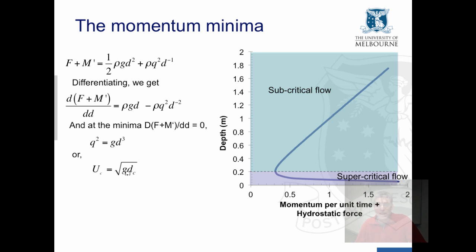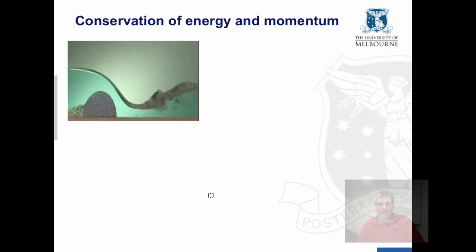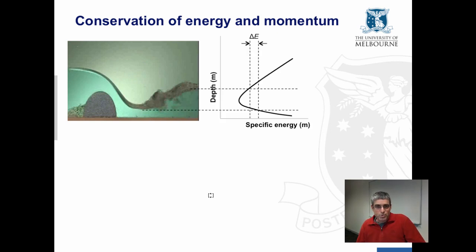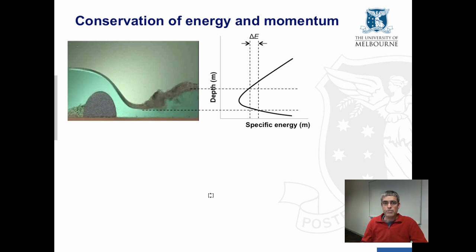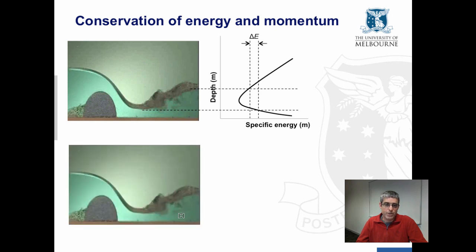The momentum equation actually looks almost identical to the specific energy equation, with a minima at critical flow and increases in the sum of momentum and hydrostatic force whether you increase or decrease depth from that point. We've already done this with the specific energy equation. We're going to apply the energy curve and the momentum curve to the hydraulic jump. We have this loss of energy through the jump associated with turbulence, as seen on the specific energy curve. Now let's do the same for the momentum curve.